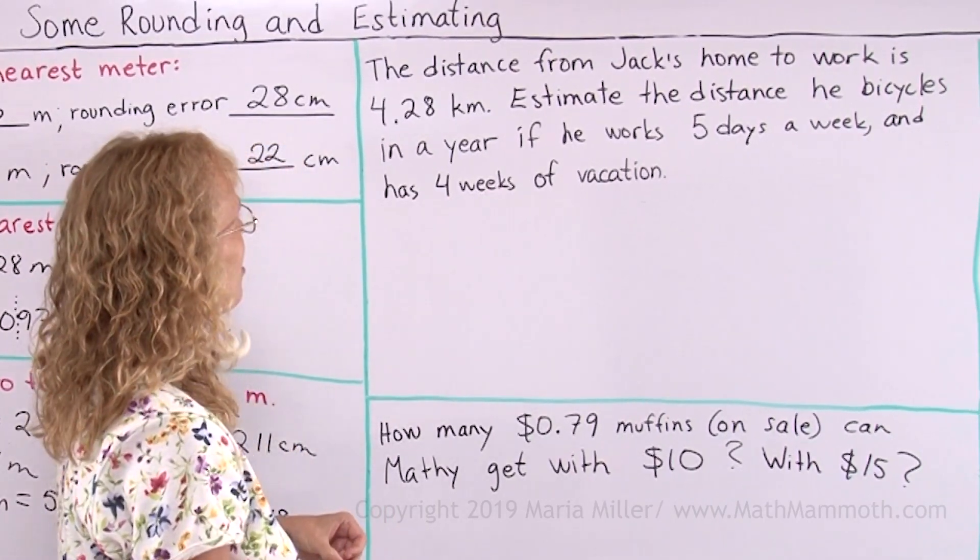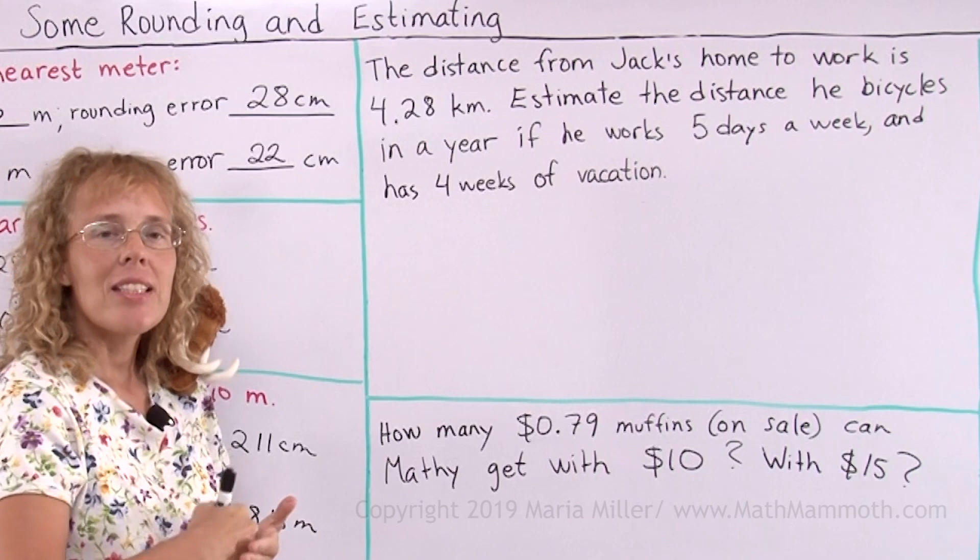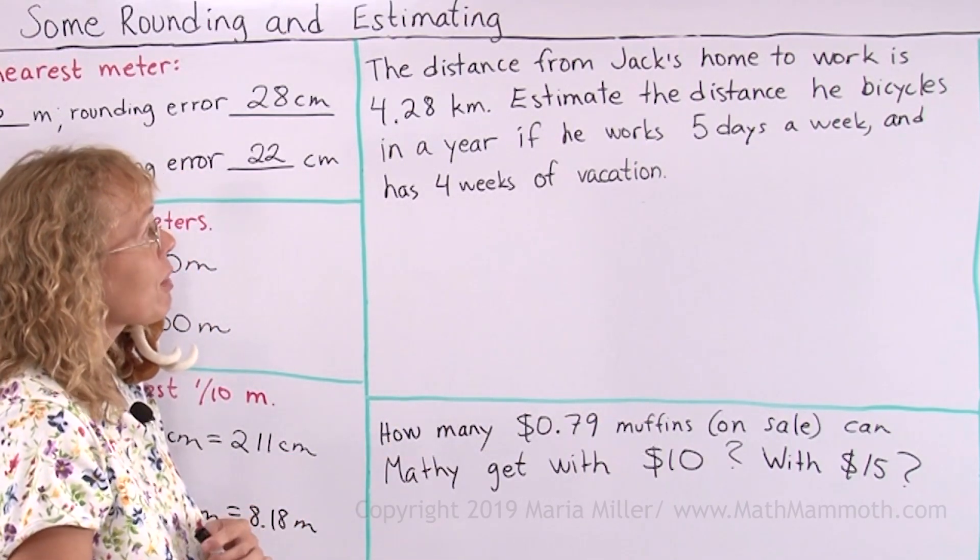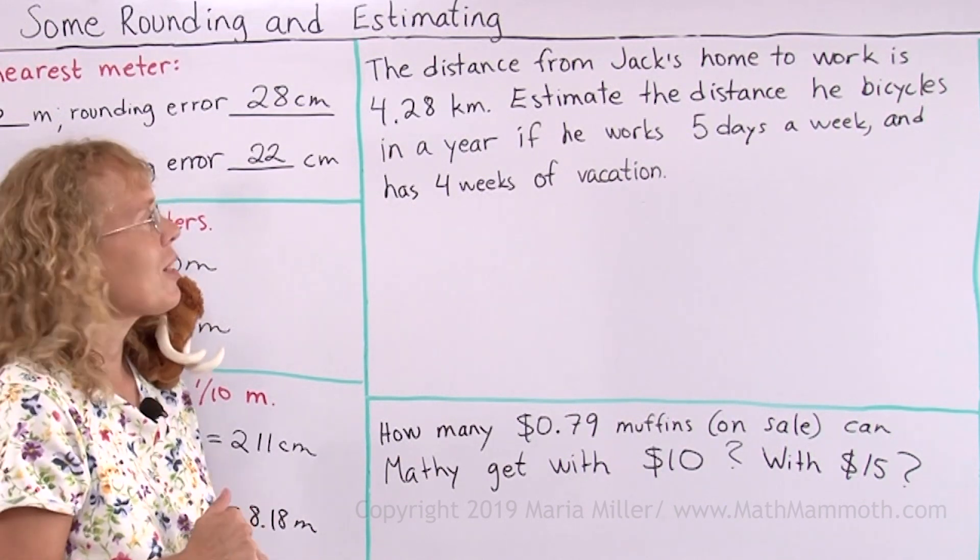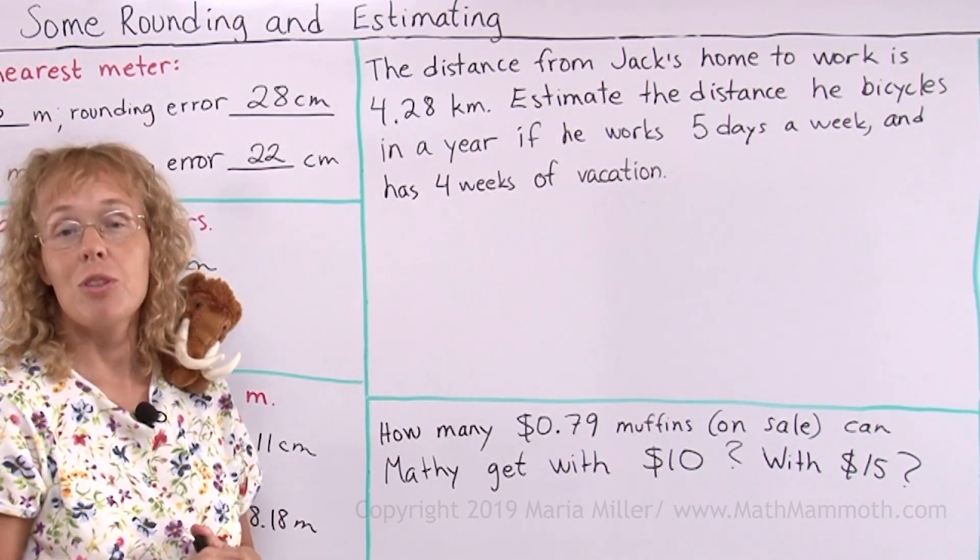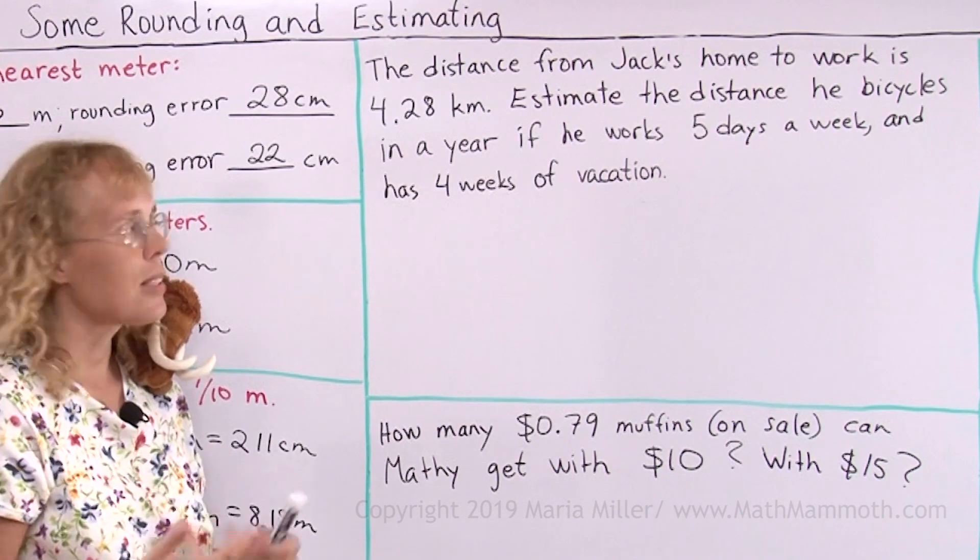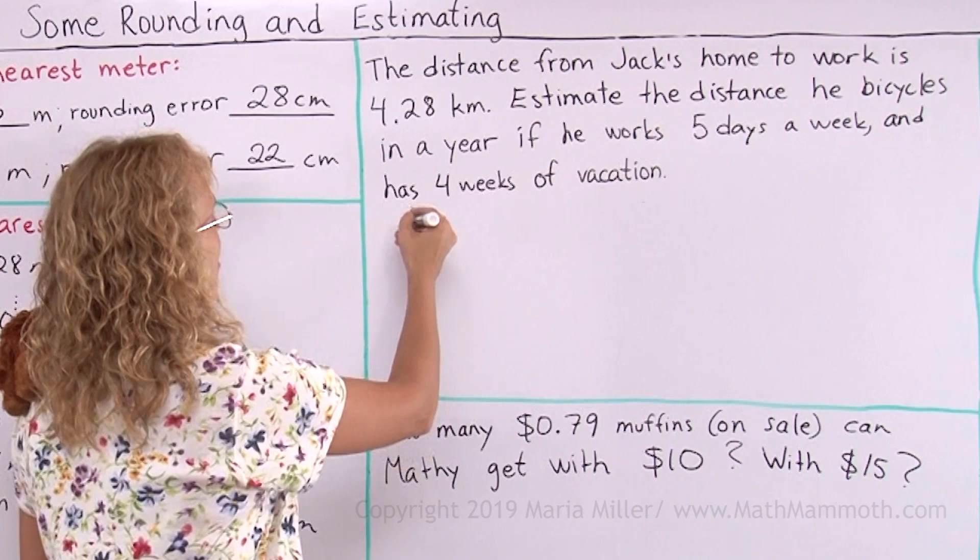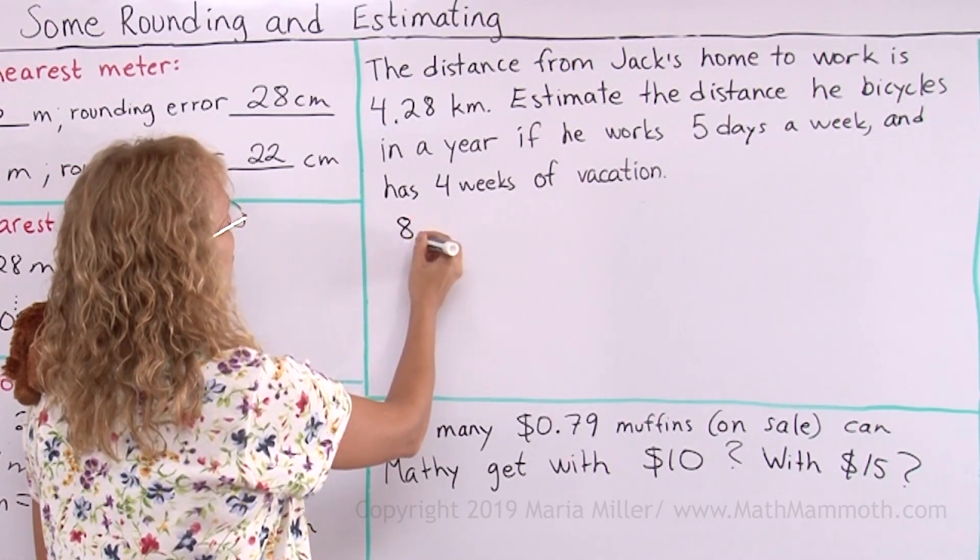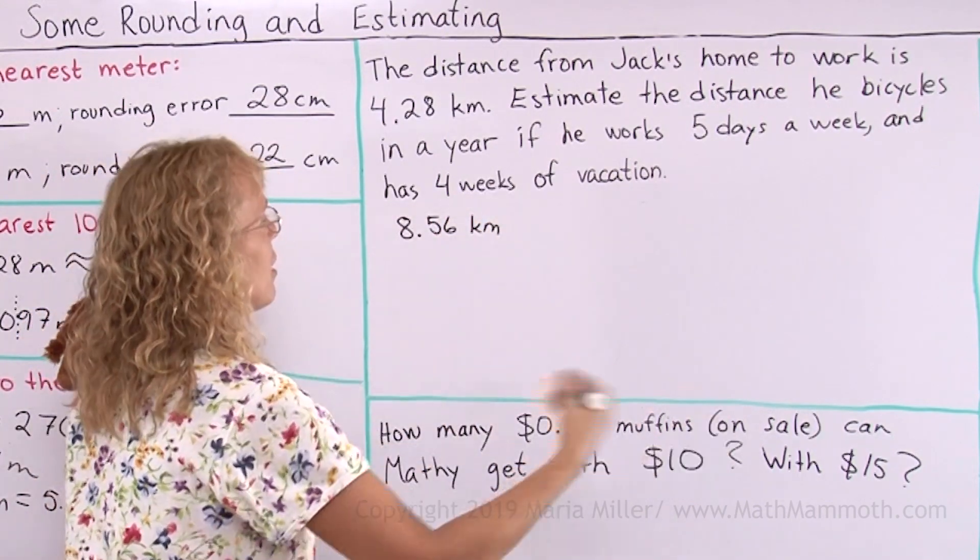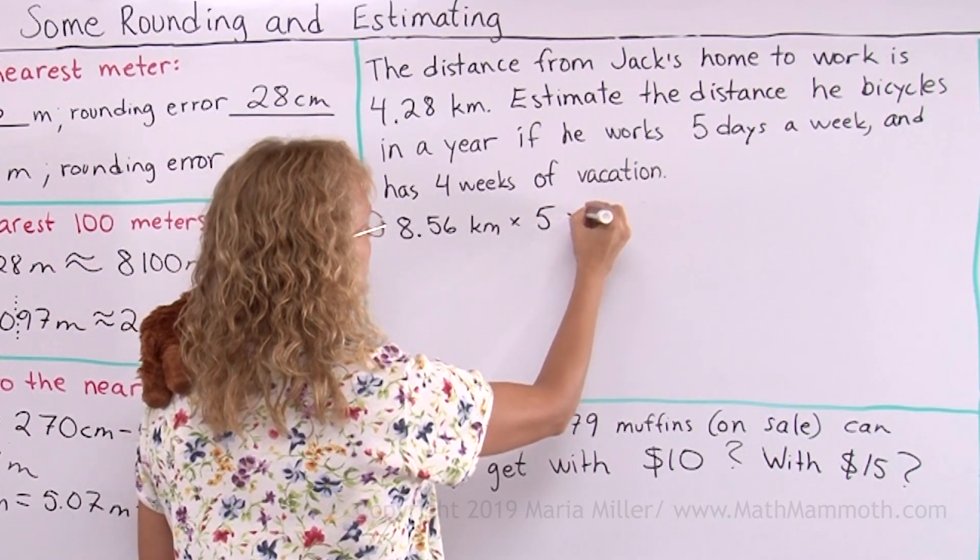The distance from Jack's home to work is 4.28 kilometers, and estimate the distance he bicycles in a year if he works 5 days a week and has 4 weeks of vacation. So that means he works 48 weeks. Now this is basically a multiplication problem, but to estimate we will need to round some of our numbers so we can calculate it mentally. But let me first figure out what we actually need to multiply. We need to multiply by the distance. Now each day it might be helpful to double that for starters, because each day he bicycles 8.56 kilometers back and forth. And then how many days does he work in a year? There was 48 weeks and 5 days a week.